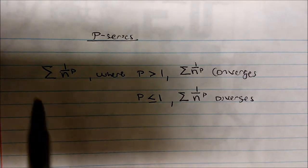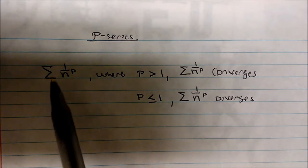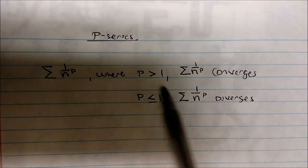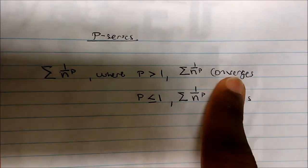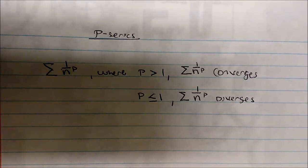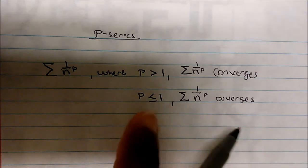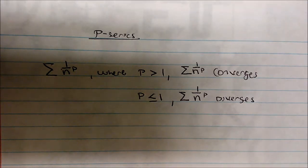The P-series is given by the summation from n equal to one to infinity of one over n to the P. If P is greater than one, the series converges. If P is less than or equal to one, the series diverges. Be careful — P-series is the opposite of what you might expect: whenever P is strictly greater than one the series converges, and whenever P is less than or equal to one the series diverges.